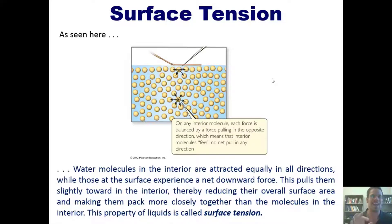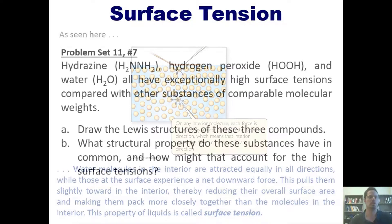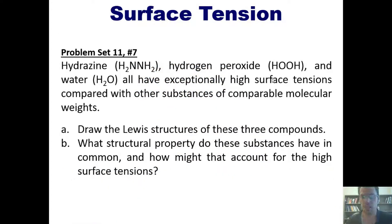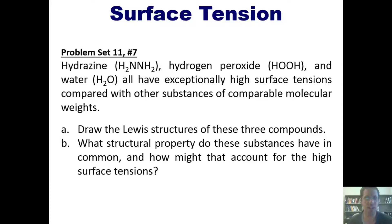This explains why molecules at the surface have surface tension, and also takes us to a wonderful problem. Hydrazine (N₂H₄), hydrogen peroxide (H₂O₂), and water (H₂O) all have exceptionally high surface tensions compared with other substances of comparable molecular weights. First, draw the Lewis structures of these three compounds. Second, tell me what structural or intermolecular property these substances all have in common and how that might account for their high surface tensions. I'm not going to do this problem for you — I invite you to do it on your own.